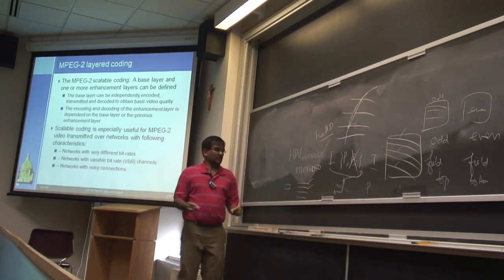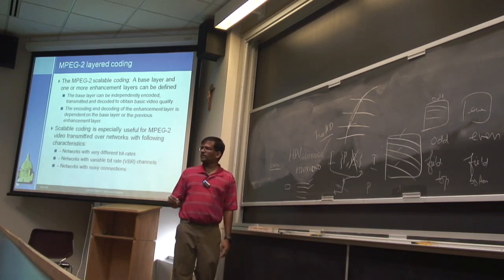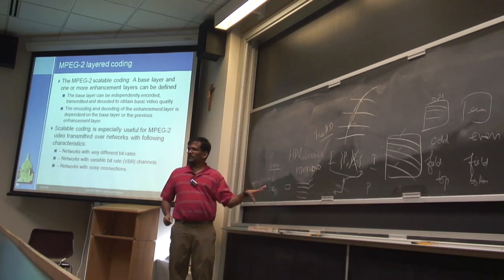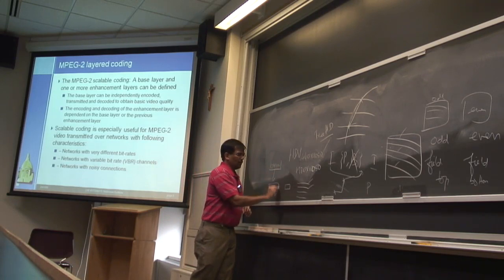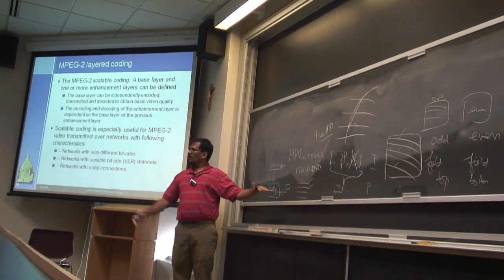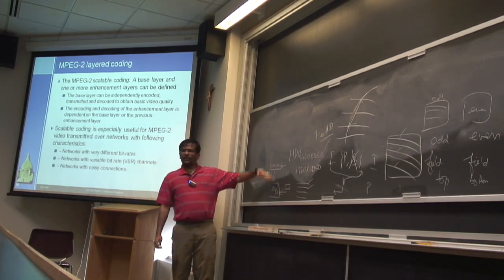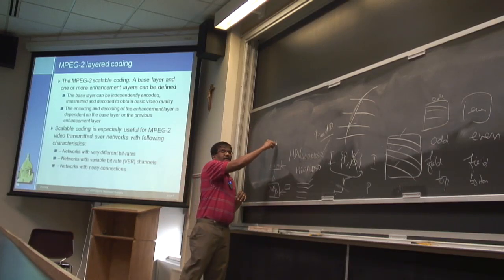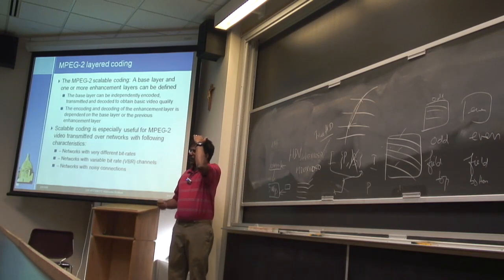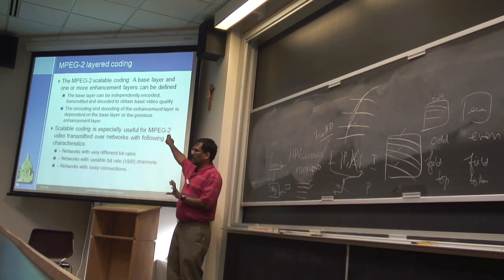One approach would be to create separate 10 Mbps and 5 Mbps versions — but then you'd need infinite versions for every possible bandwidth. The better approach is layered encoding: instead of sending one stream, you create multiple streams. I create the video as a base layer plus several enhancement layers. If you add all layers together, you get full quality.